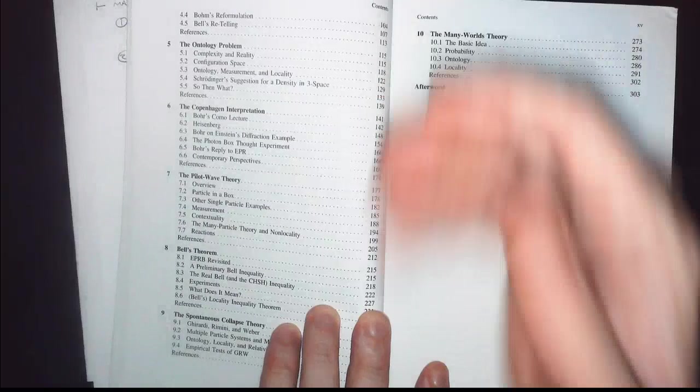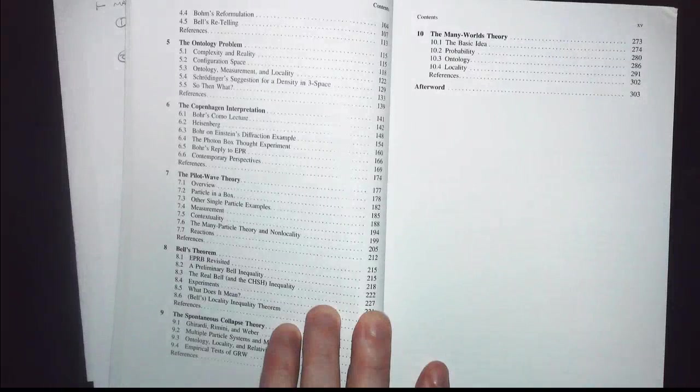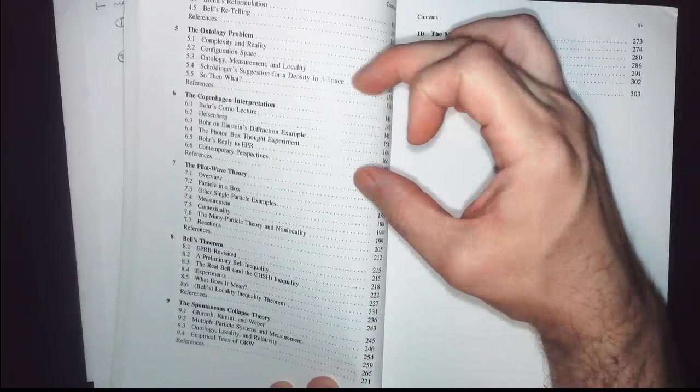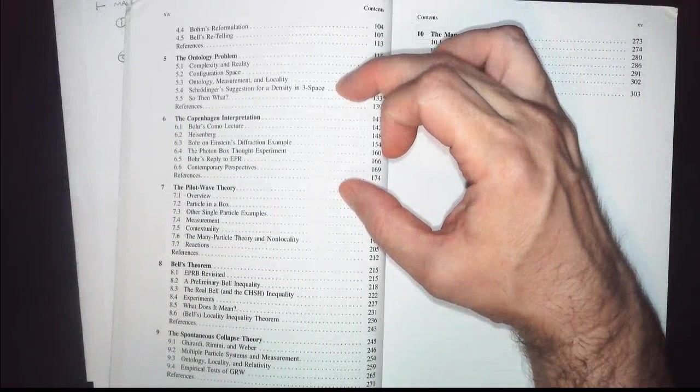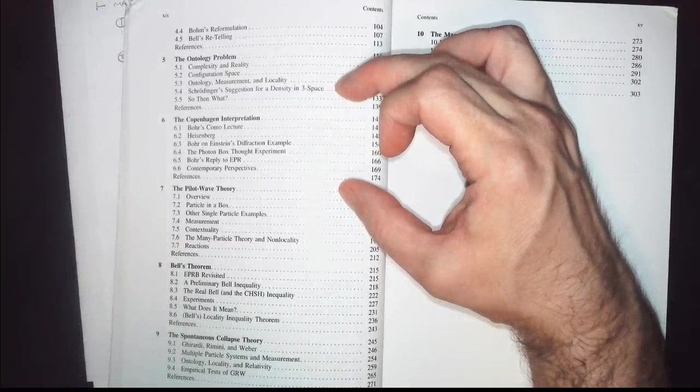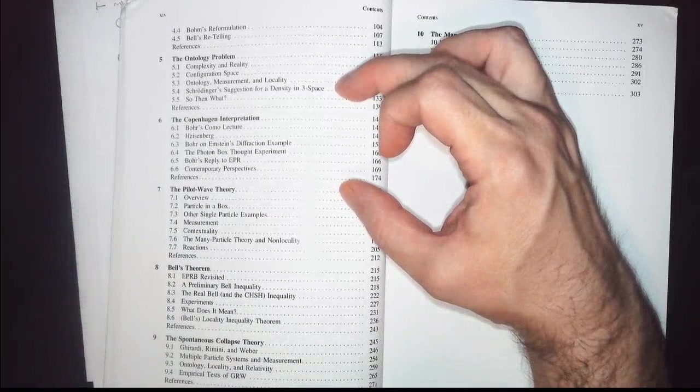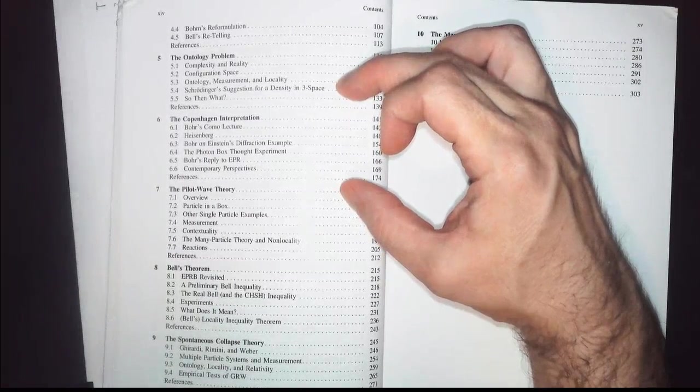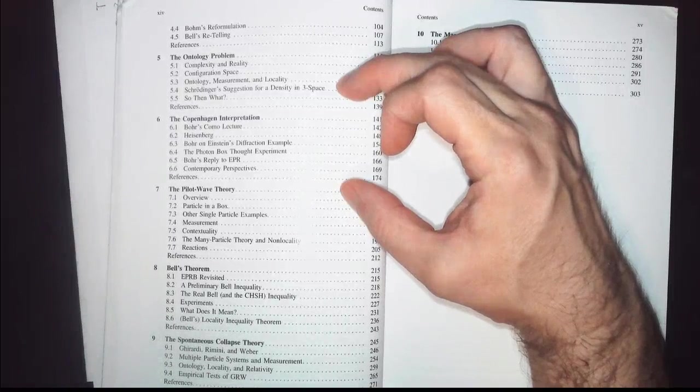So the first five chapters, we go through those things. Now we get into interpretations. There's four interpretations in the last five chapters. The first one is the Copenhagen interpretation. And that's really just a sort of shut up and calculate kind of idea. We can't really say anything about what's happening in the evolution. We just can talk about the measurements and stuff like that. It's a very positivist formulation, as in logical positivist, if you're familiar with philosophy.